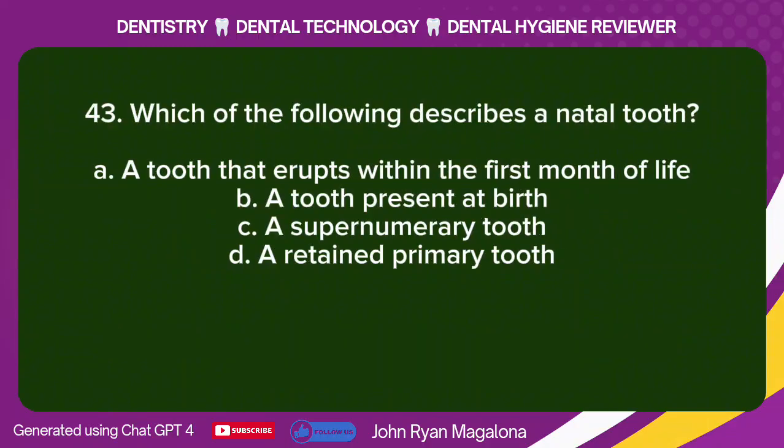Question 43: Which of the following describes a natal tooth? A. A tooth that erupts within the first month of life. B. A tooth present at birth. C. A supernumerary tooth. D. A retained primary tooth. Answer: B. A tooth present at birth.